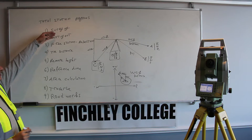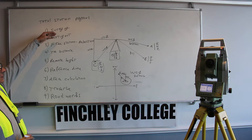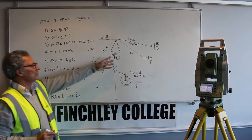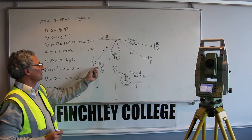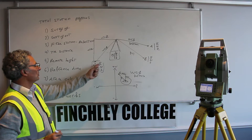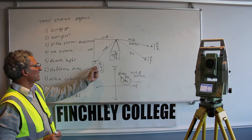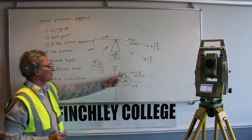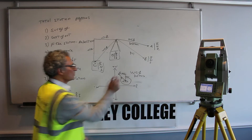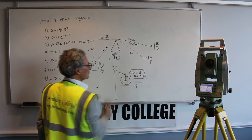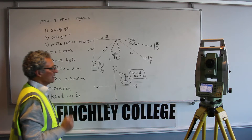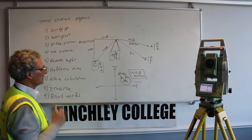So setting out is very simple and straightforward: you calculate where the instrument is positioned, you tell it what point you want to set out, it gives you the bearing and distance, you turn the instrument and set it out.